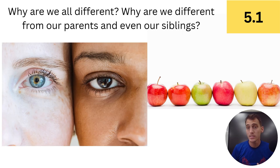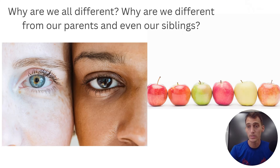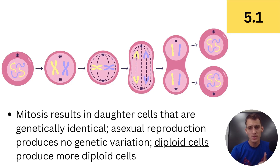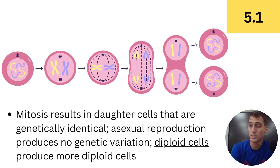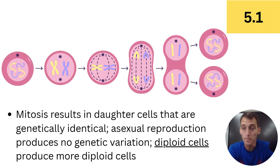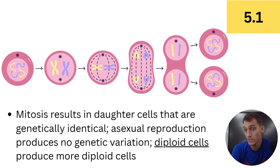To understand how that happens, we need to understand meiosis first, and how it compares to mitosis. Here's a review: mitosis results in daughter cells that are genetically identical. This is a result of asexual reproduction — one cell copies all of its DNA, copies its genome, and splits into two, forming two new cells with the exact same genome. This does not produce any genetic variation. Variation means differences, and those daughter cells are essentially the same cell.